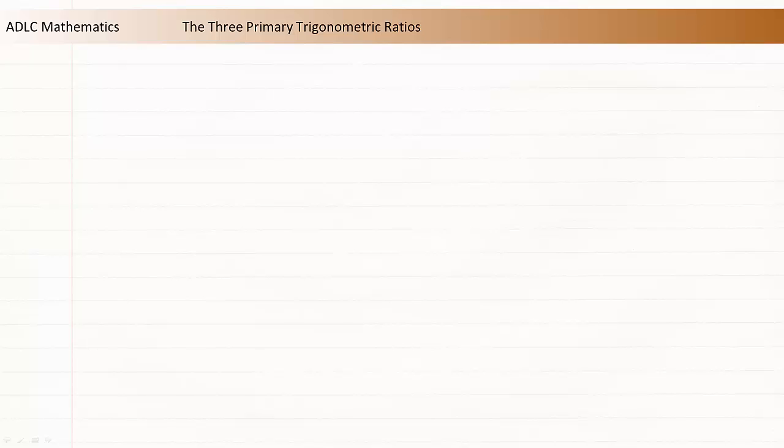There are three primary trigonometric ratios: the tangent ratio, the sine ratio, and the cosine ratio. Each of these ratios can be used to relate two side lengths to the size of an acute angle in a right triangle.